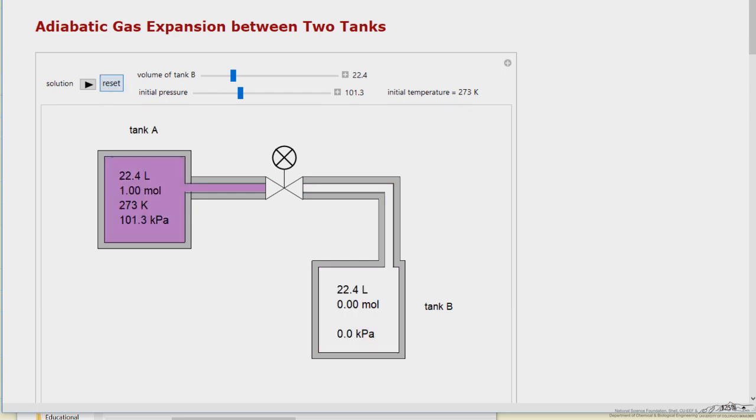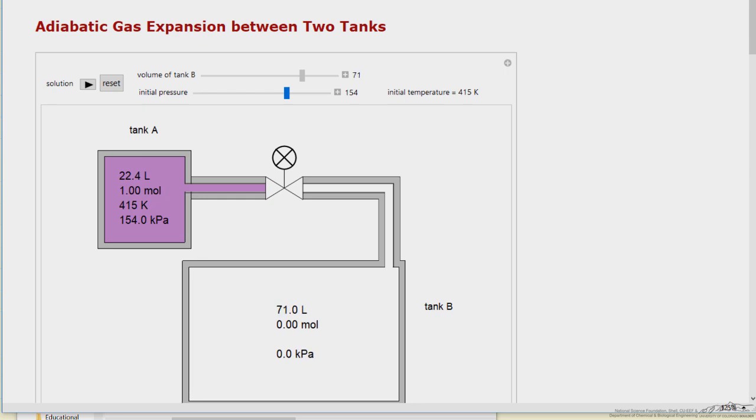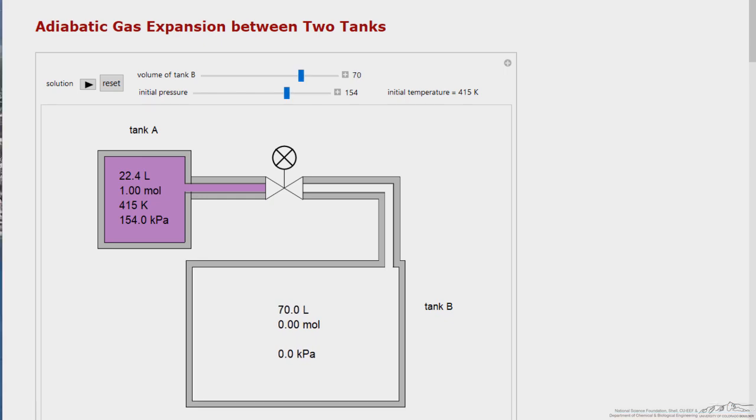I can reset this and make the pressure higher. This also makes the temperature higher because we've constrained the system to only have one mole and the volume is fixed for tank A. I can make tank B bigger, and now more gas ends up in tank B.